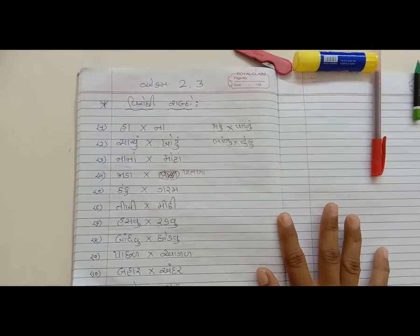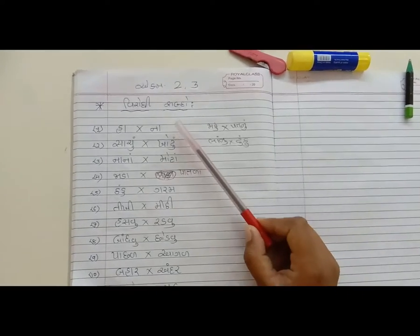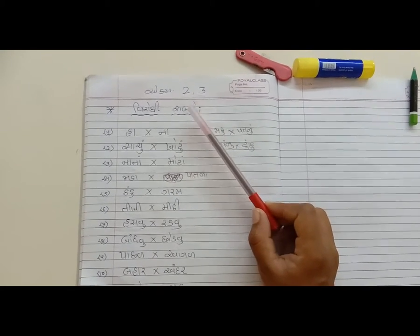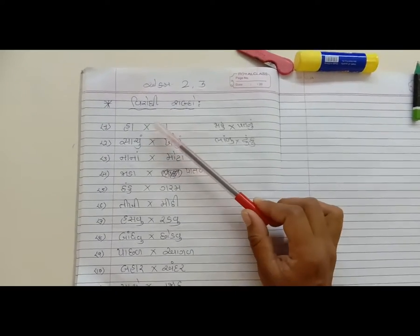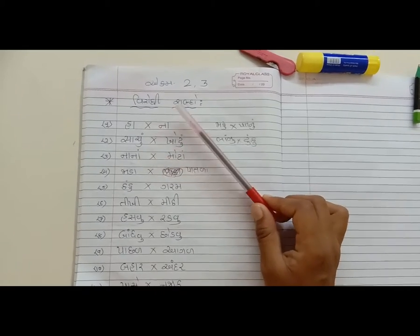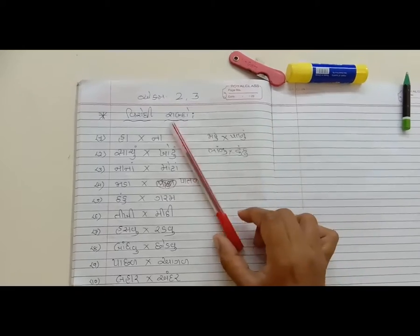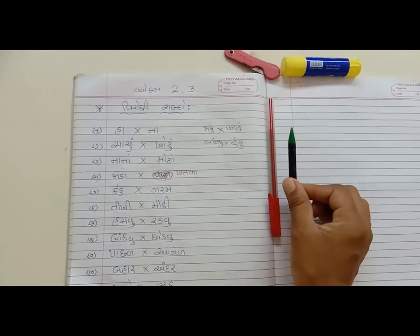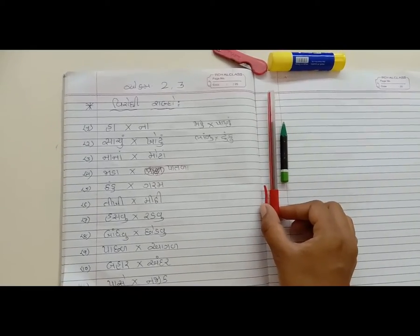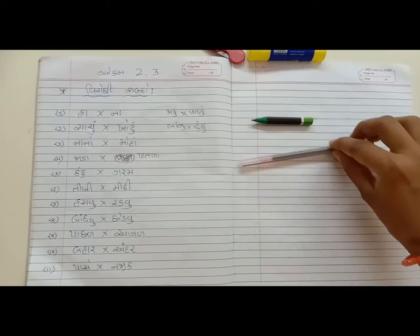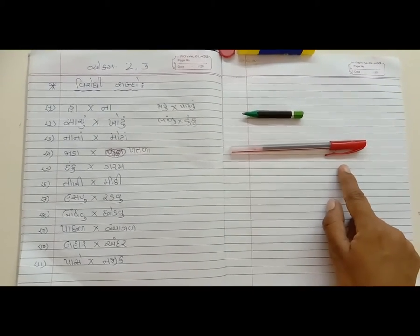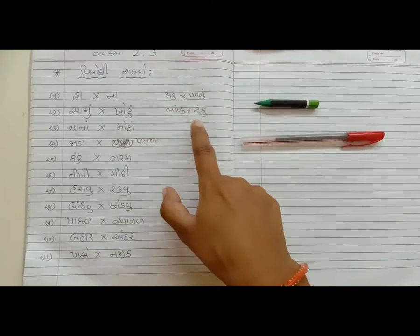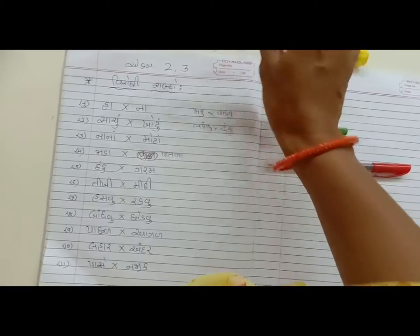નામાસ્તી વિદ્યાર્તી મિત્રો, કેમ છો બધા? મજામાં? આજે આપણે ધોરણ બે વિષે ગુજરાતી. જેમાં આ મારી પાસે એક બોલપેન છે, એક પેંસેલ છે. હવે પેંસેલ કેવી છે? તો ટૂંકી છે. અને બોલપેન કેવી છે? - હજી તમને ઉદાહરણ બતાઉ છું.